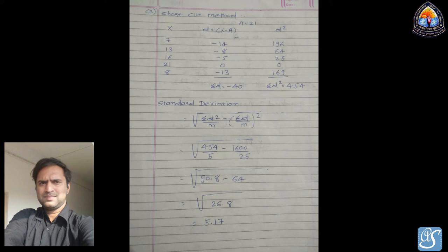The third method is the shortcut method. Assume any value from x; here we let A = 21, the fourth value of x. Then d = x − A. So for 7: d = 7 − 21 = −14; for 13: d = −8; for 16: d = −5; for 21: d = 0; for 8: d = −13. In the next column, find d²: 196, 64, 25, 0, and 169 respectively.